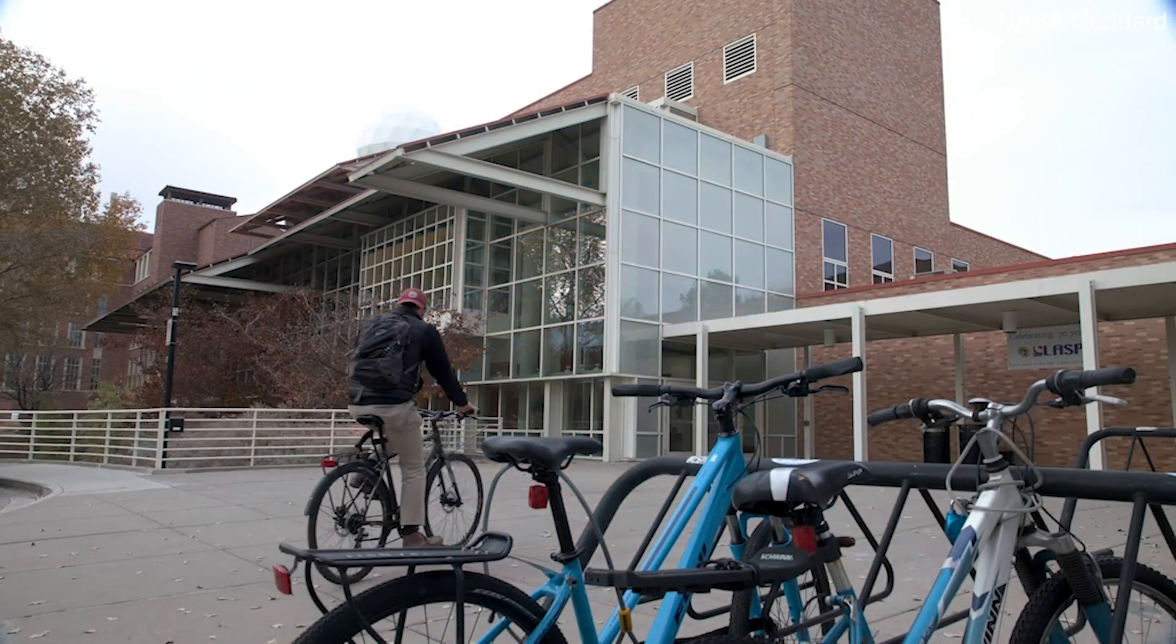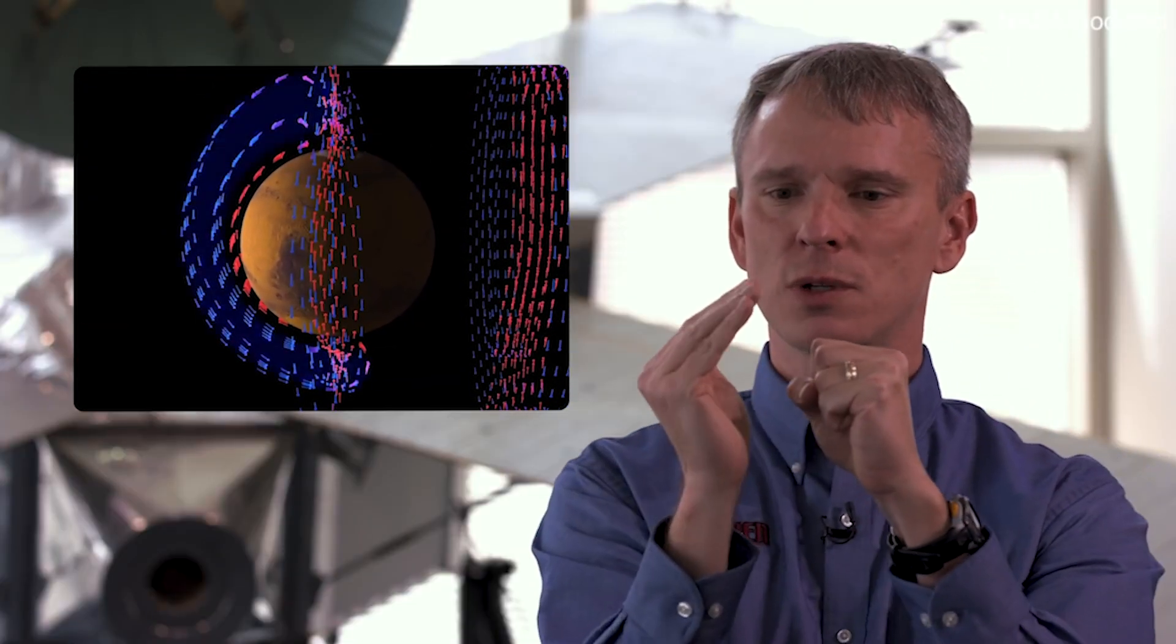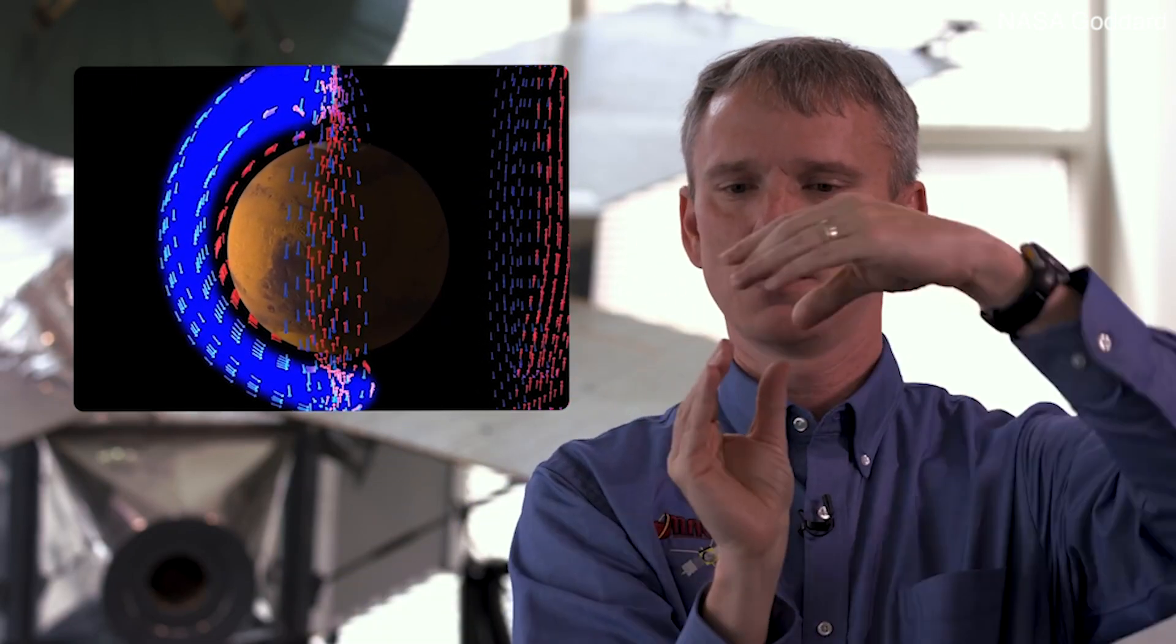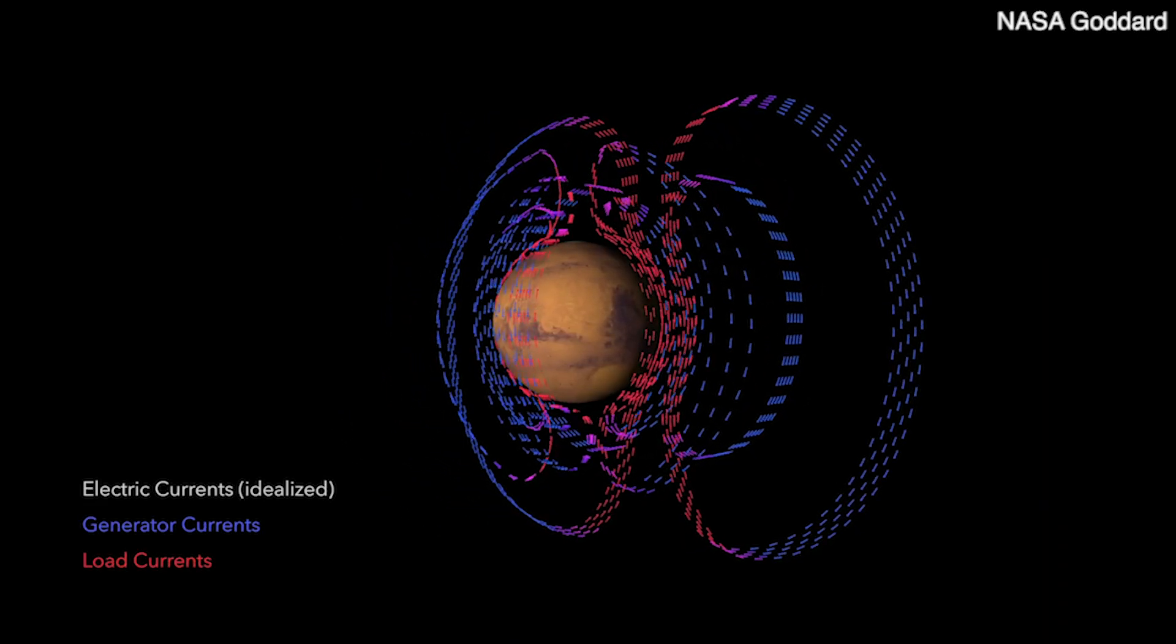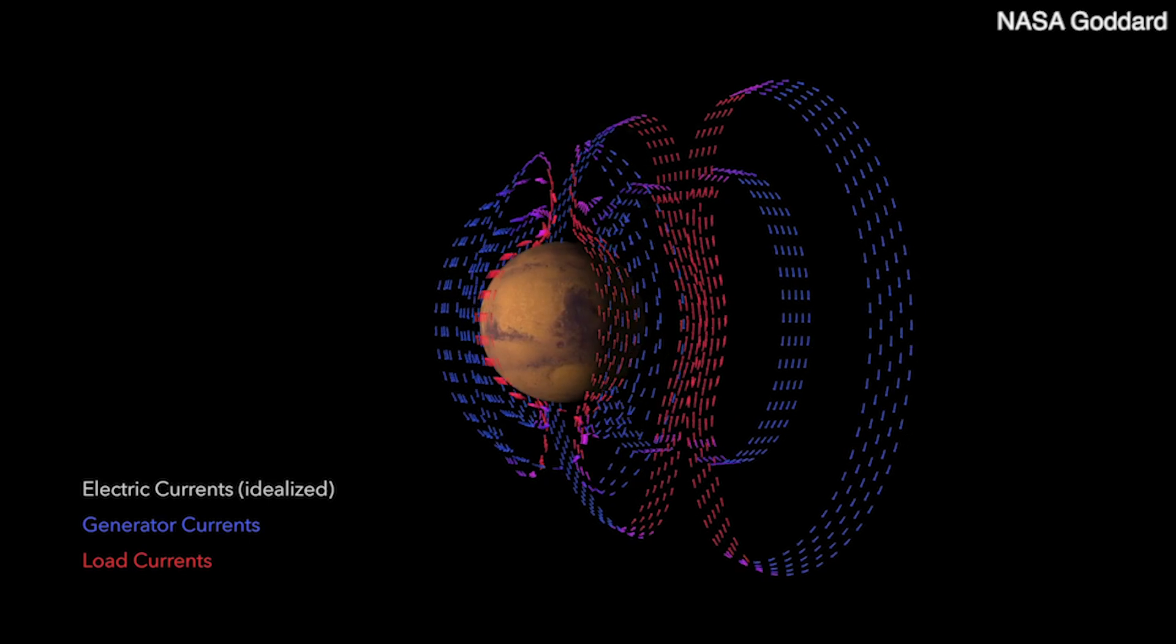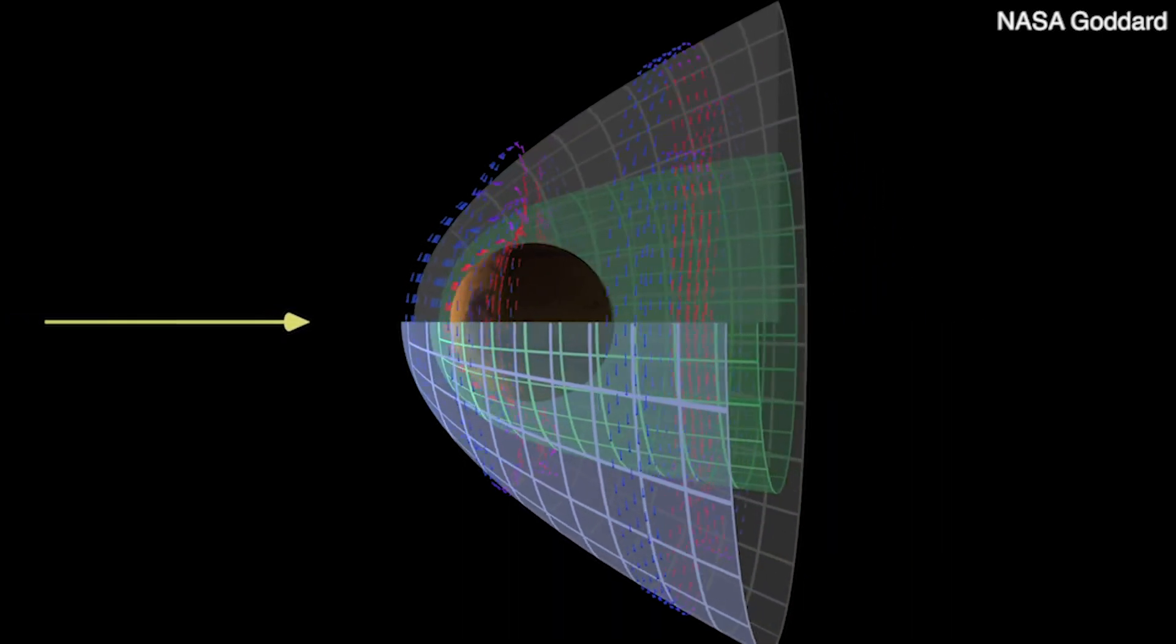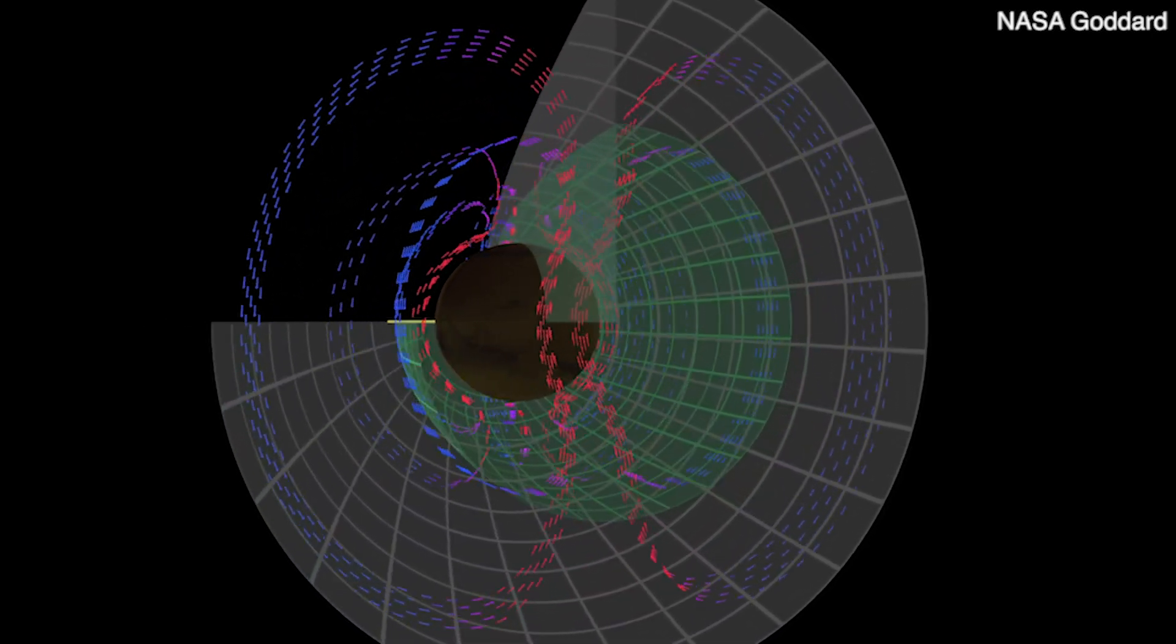One thing that wasn't so expected was this specific configuration of the electric currents that we derive from the magnetic field data. If Mars is a ball here, it's sort of this cup shape on the day side that loops back on itself. What wasn't so intuitive to me was the directions of those currents and the fact that it wraps continuously around to the night side and makes this marvelously complex current system on the night side as well.